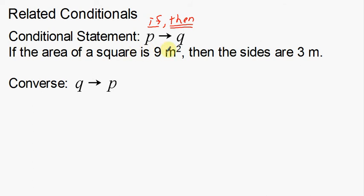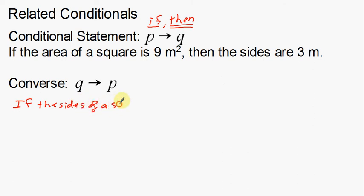So the original is: if the area of a square is 9 meters squared, then the sides are 3 meters. Now I'm going to take 'the sides are 3 meters' as my new hypothesis. But I can't just say 'if the sides are 3 meters' — the sides of what? This is the tail end of the sentence where we've already identified the subject. So I have to say: if the sides of a square are 3 meters. Notice I kept 'of a square' at the beginning so the sentence makes sense.